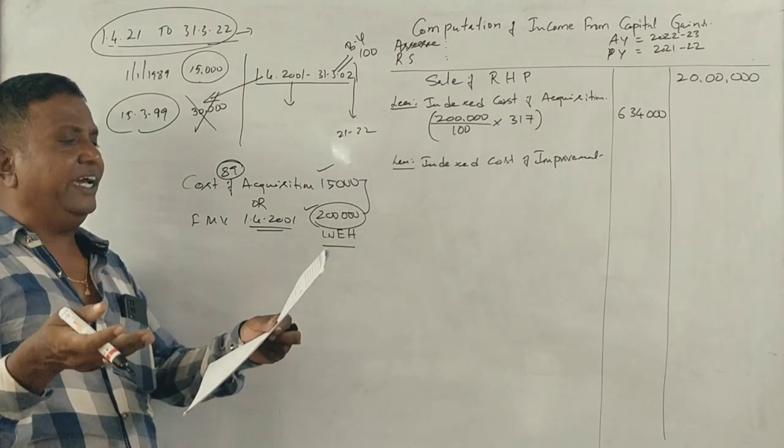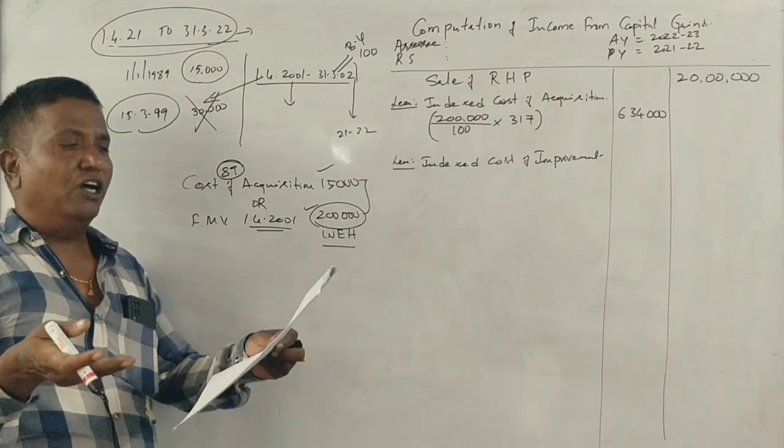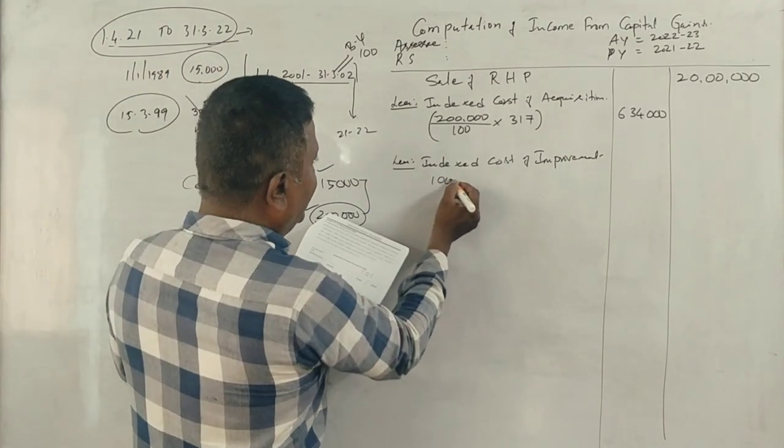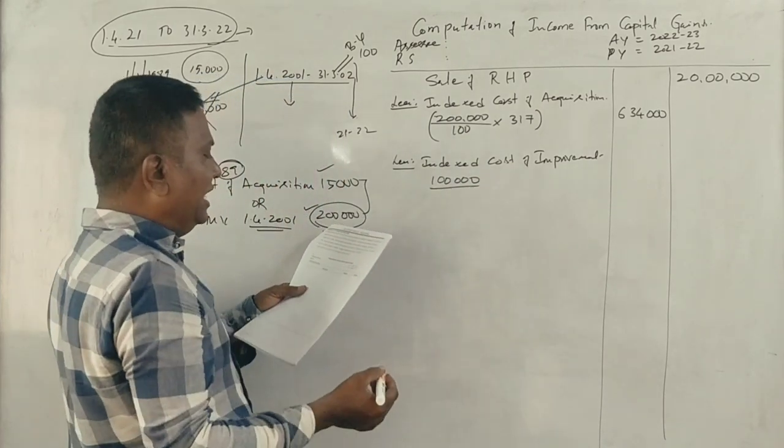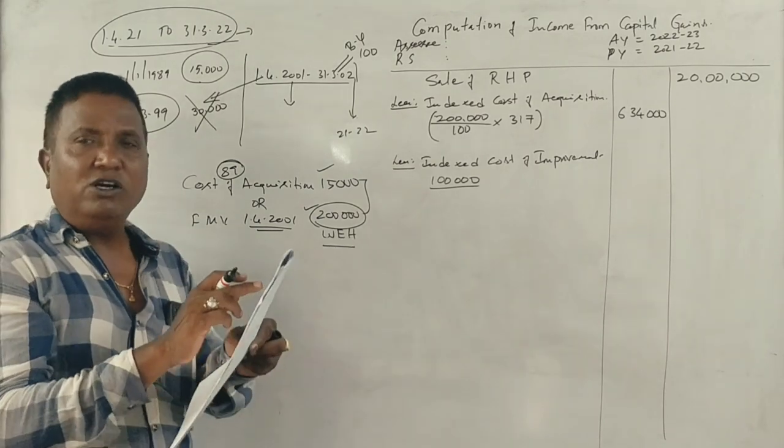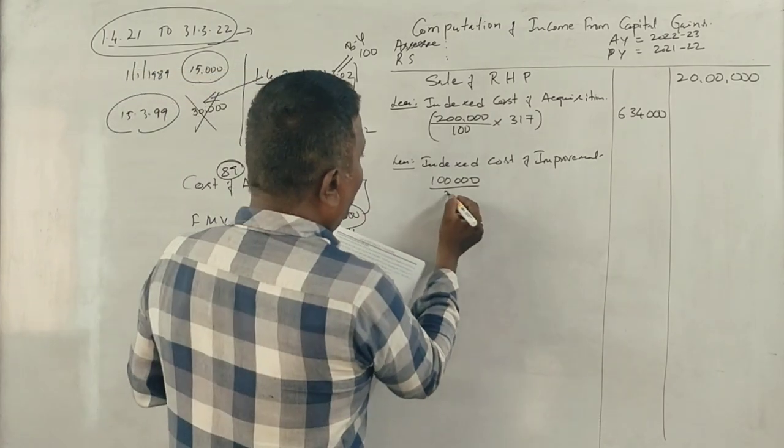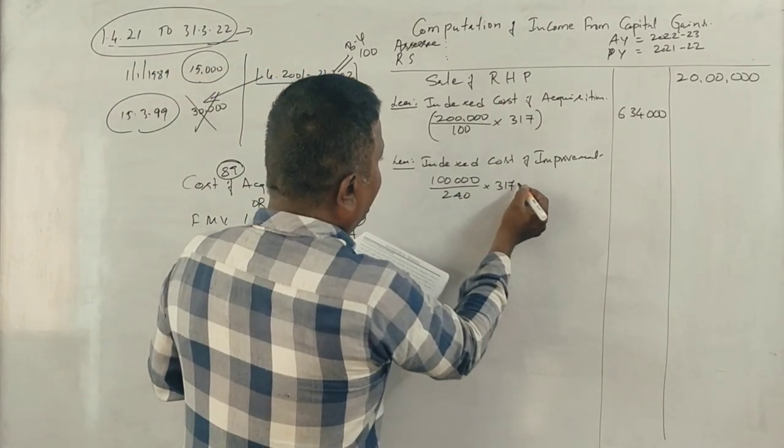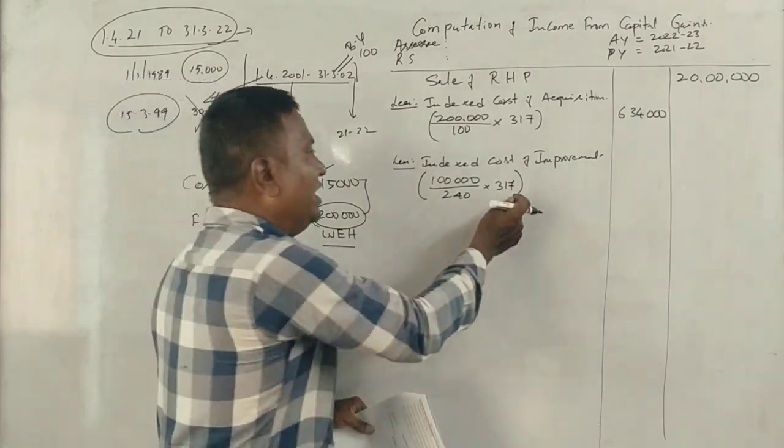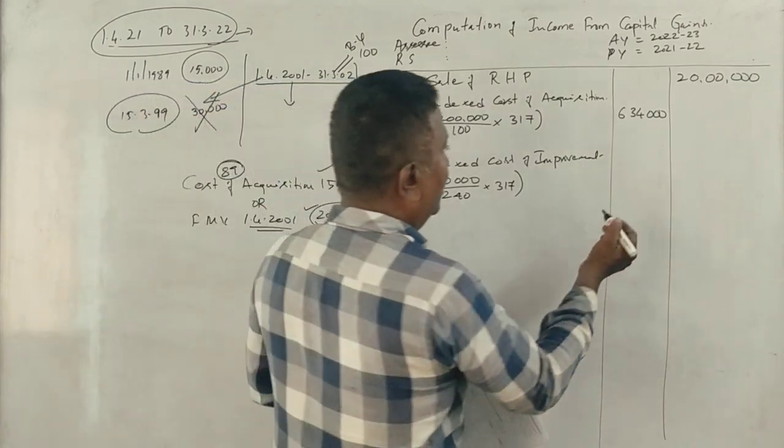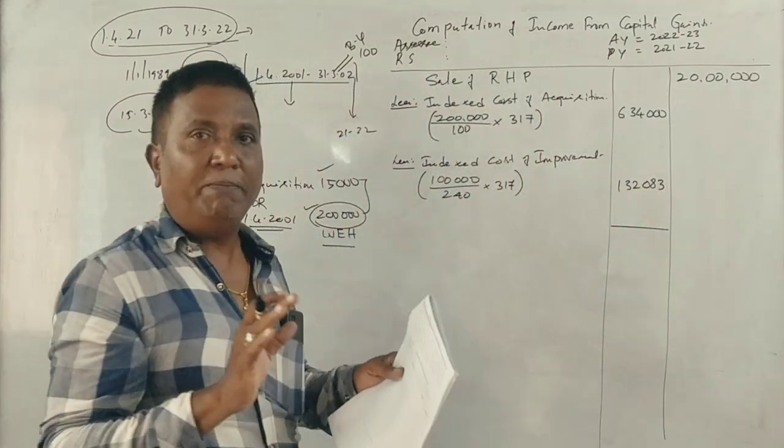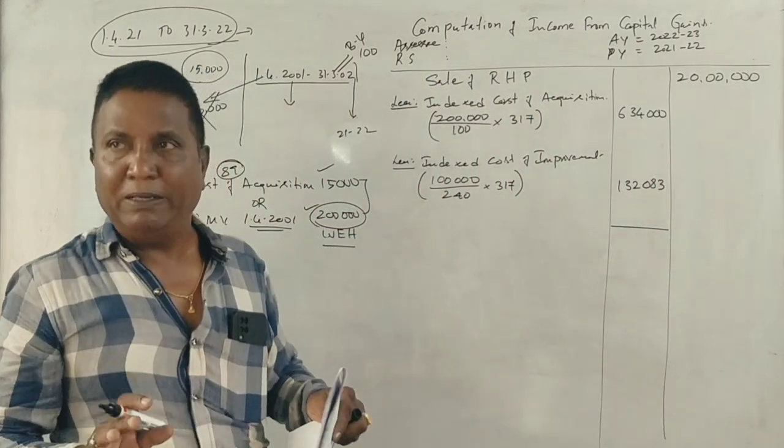Further, he added a room to this house at cost of 1 lakh on 14th of November 2014. Cost inflation index for 2014 is 240. Transfer year 2021-22 is 317. So 1 lakh multiplied by 317 divided by 240 equals 1,32,083. This is the indexed cost of improvement.